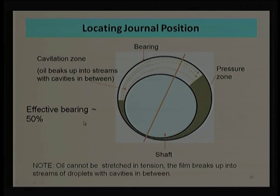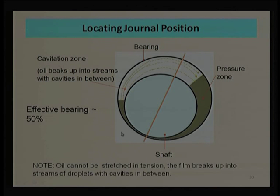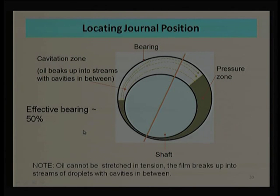A second conclusion: the bearing is effective only to approximately 50 percent. The pressure zone is more than 180 degrees but less than 210 degrees. The portion beyond 180 degrees will not contribute much to load sharing. For simplicity and easy calculation, we can assume the bearing is effective for 50 percent of its circumference — half the bearing from a circumferential point of view, not half the length.